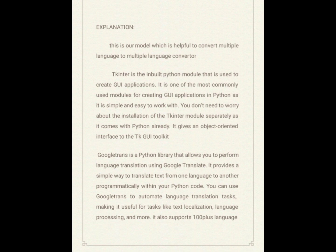Creating windows and dialogue boxes: Tkinter can be used to create windows and dialogue boxes that allow users to interact with your program. These can be used to display information, gather input, or present options to the user. Building a GUI for a desktop application: Tkinter can be used to create the interface for a desktop application including buttons, menus, and other interactive elements. Adding a GUI to a command line program: Tkinter can be used to add a GUI to a command line program, making it easier for users to interact with the program and input arguments. Creating custom widgets: Tkinter includes a variety of built-in widgets such as buttons, labels, and text boxes, but it also allows you to create your own custom widgets.